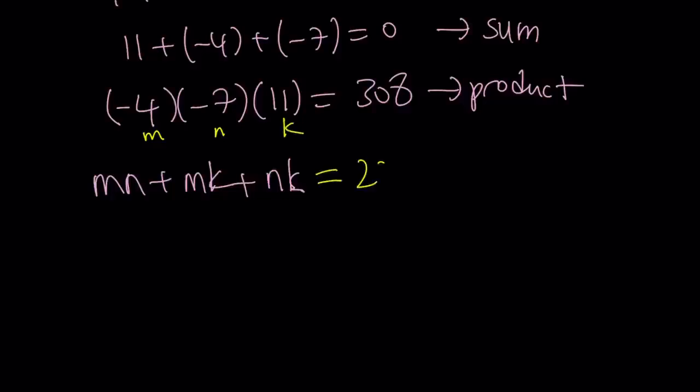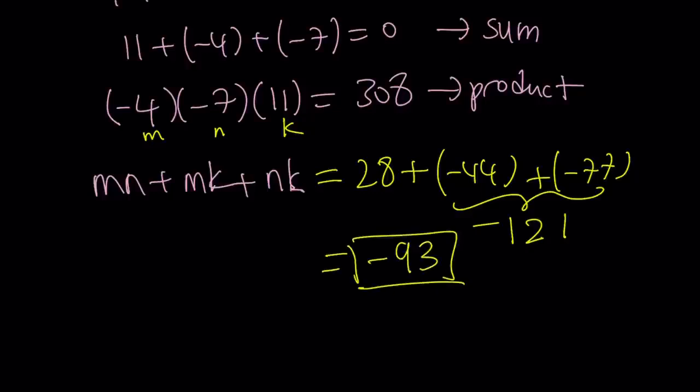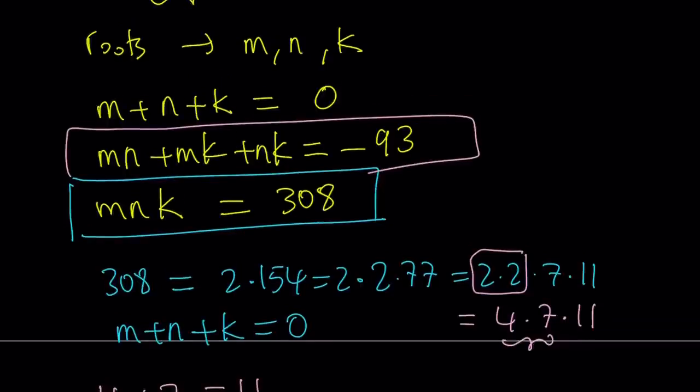MN, that is 28 plus MK, that is negative 44. And NK, negative 77. These two will make 121, but that's a negative. So 28, if you add them up, you're going to get negative 93.